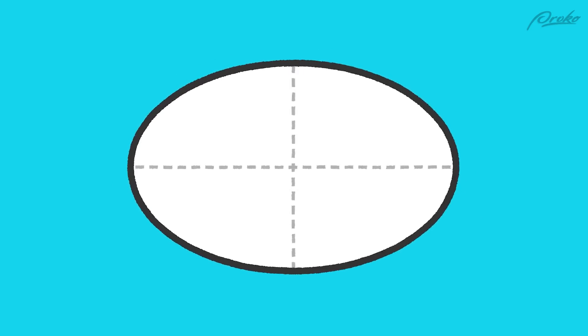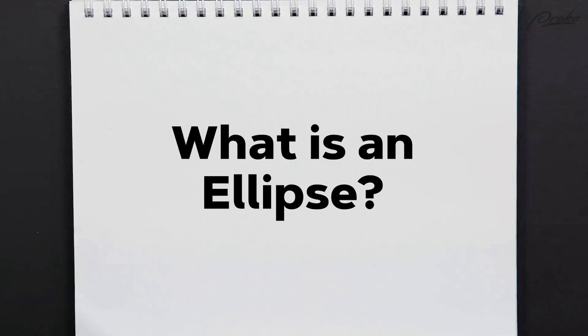This oval is also an ellipse, but this egg-like oval is not an ellipse. Ellipses must have four equal quadrants. Ellipses have a mathematical definition. Let's learn about ellipses. If you can't remember, you can just say oval and you'll be right.